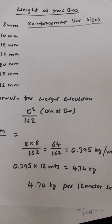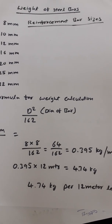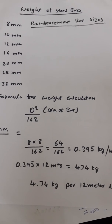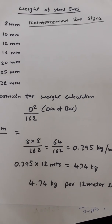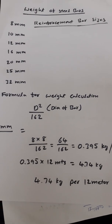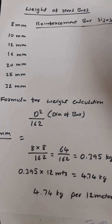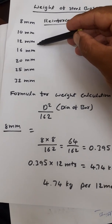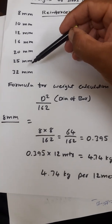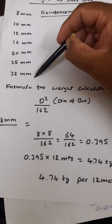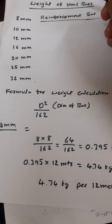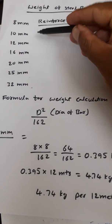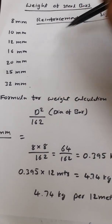Hi everyone, this is Jagan Mohan, civil engineer. Today we are going to learn about the weight of reinforcement bars. Generally in construction we will have 8mm, 10mm, 12mm, 16mm, 20mm, 25mm, and 32mm bars — even 40mm is available in some cases, but most generally it is 8mm to 32mm reinforcement.